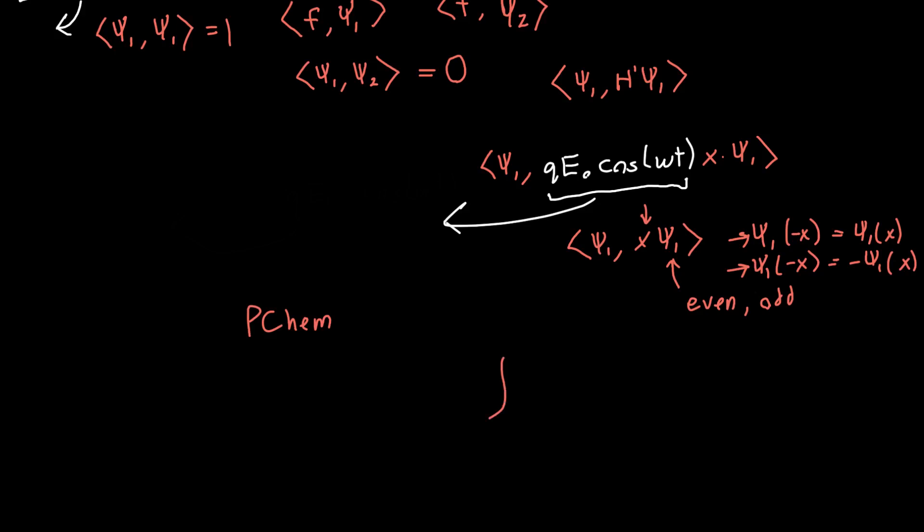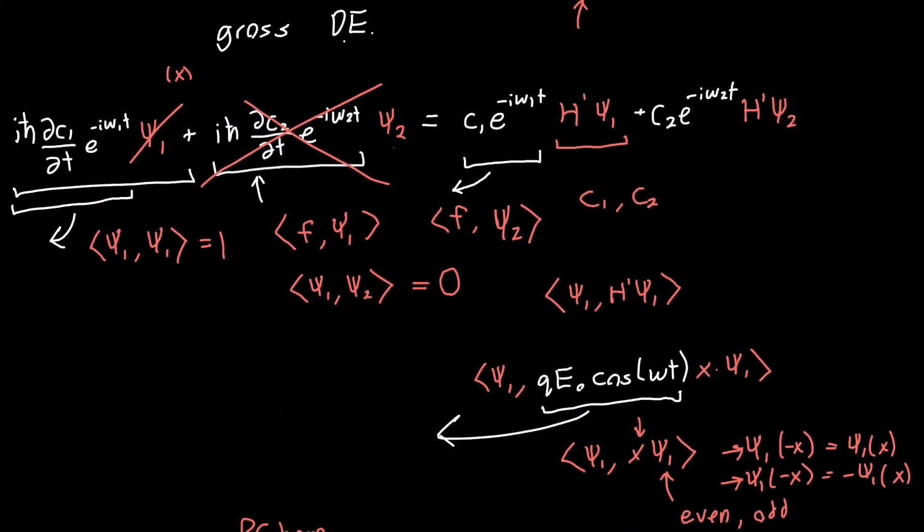If we are doing the integral from minus infinity to infinity of an odd function, which is x, times an even function psi of x times another even function psi of x, or technically psi conjugate, we know the product of two even functions is an even function, and an odd function times an even function is an odd function. So we're integrating an odd function from minus infinity to infinity, and this integral must be zero. You should also know that psi 1 decays, so psi 1 approaches zero as x approaches infinity, so this is a valid argument. The end result is that this whole term is gone.